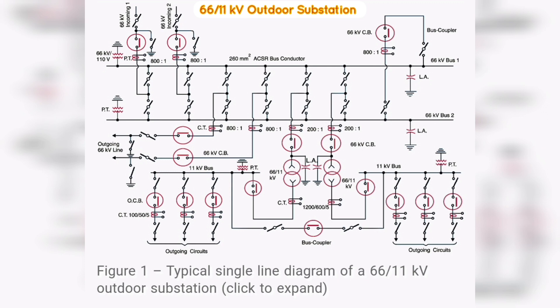If need arises, both transformers can be called upon to share the substation load. The 11 kV outgoing lines feed to the distribution substations located near consumers' localities. Both incoming and outgoing lines are connected through circuit breakers having isolators on their either end.